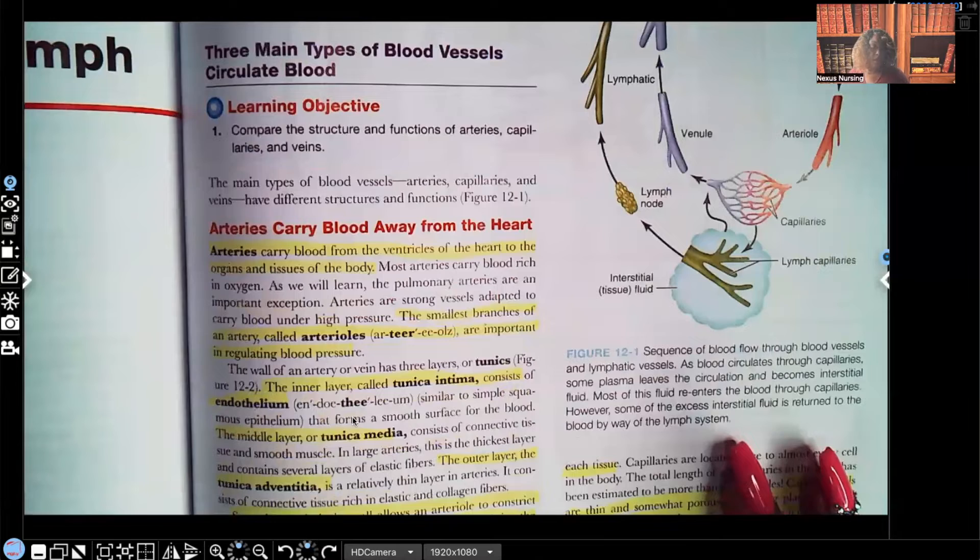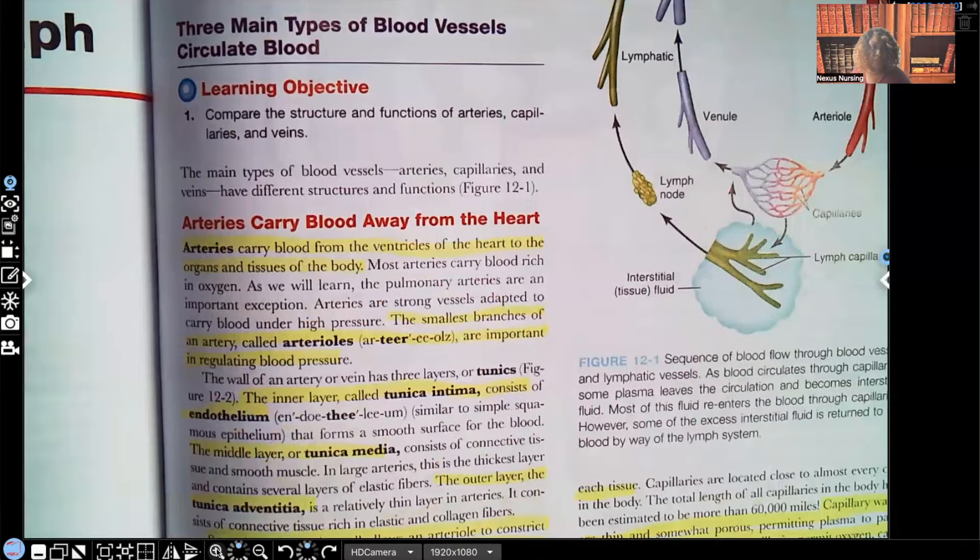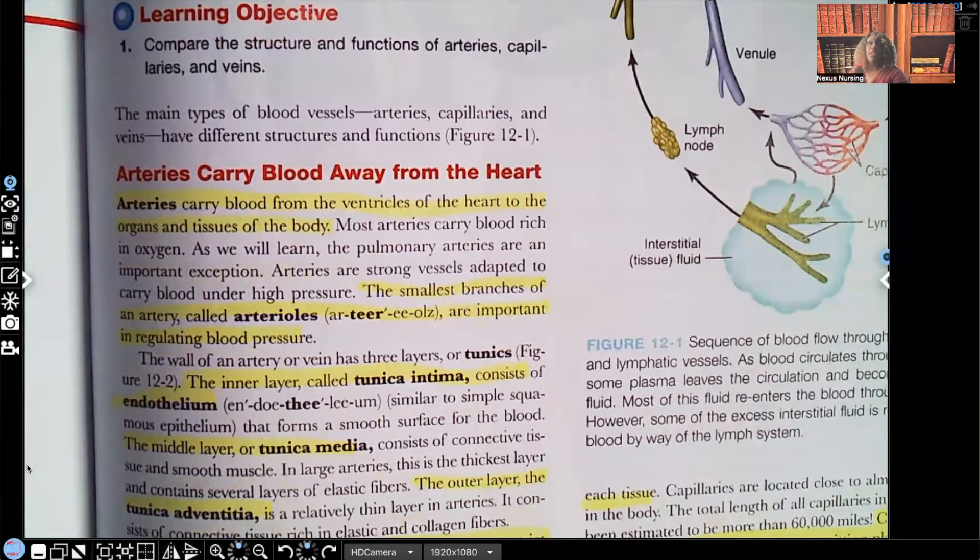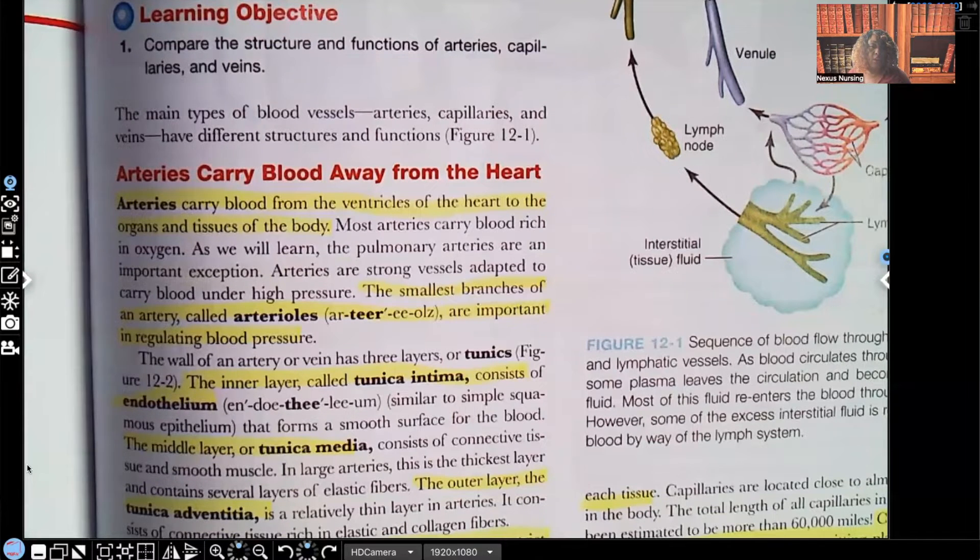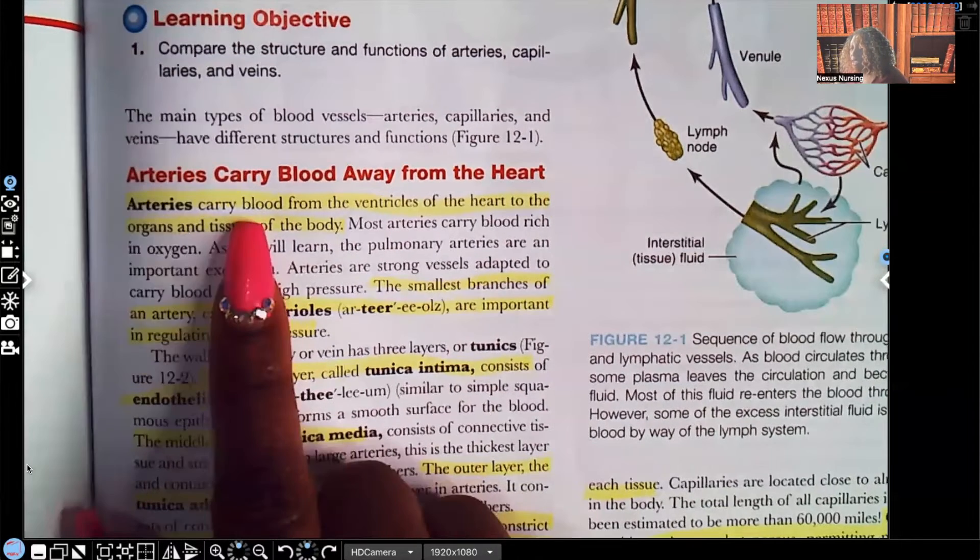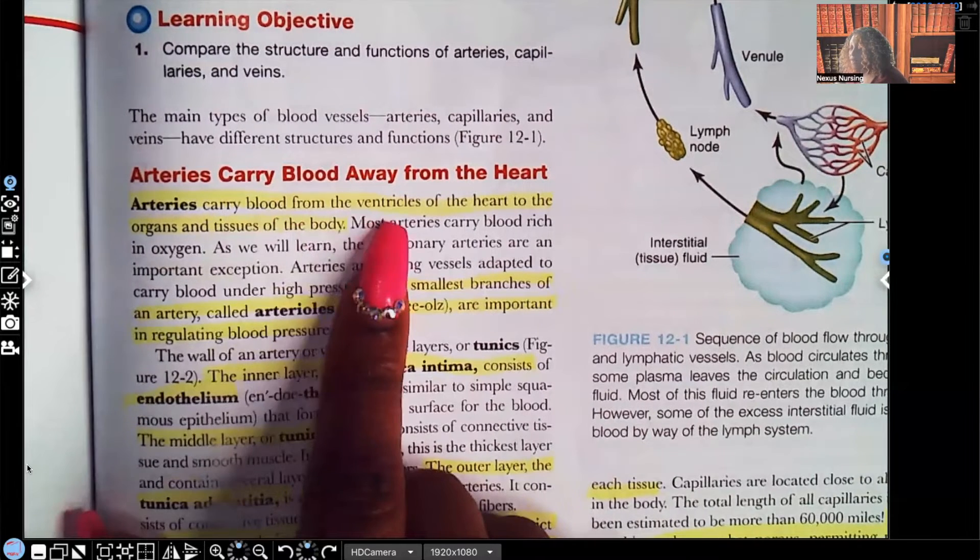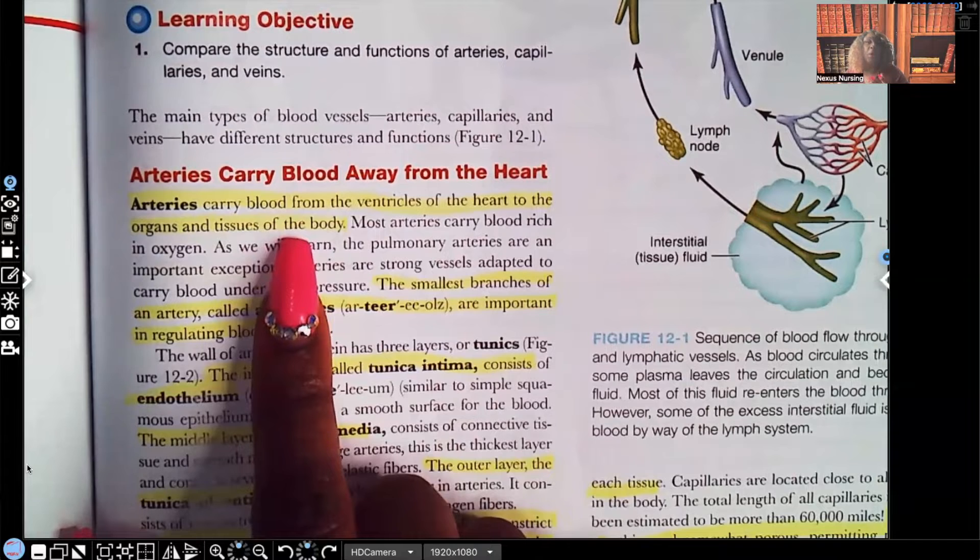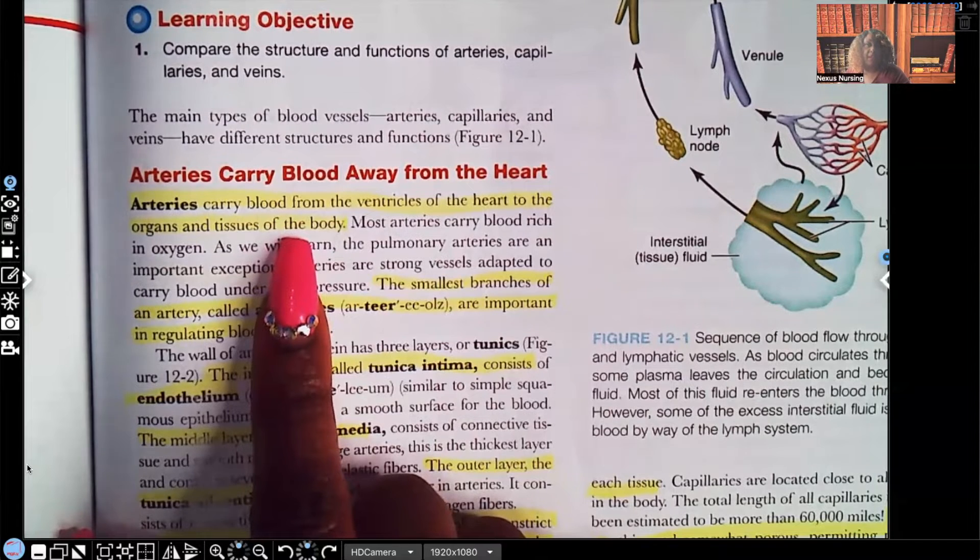Now, look at what this says. Arteries carry blood away from the heart. Let me make this a little bit bigger for you. We're going to talk about arteries now, and that is absolutely true. So when we're talking about the arteries, guys, these are vessels that contain oxygen-rich blood to go to the tissues where they belong. Arteries carry blood from the ventricles of the heart to the organs and tissues of the body. And remember, this blood that's being carried to the tissues, they're full of oxygen, vitamins, nutrients, minerals, everything that those tissues need to survive.